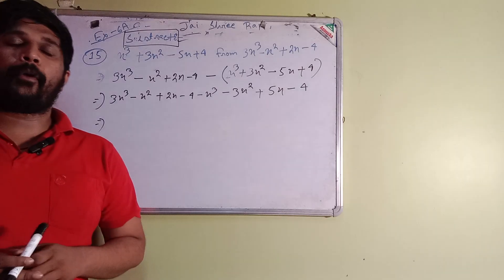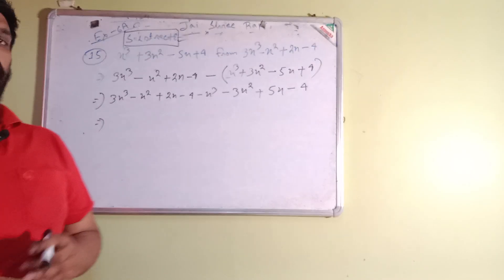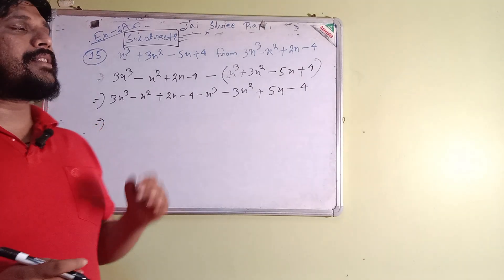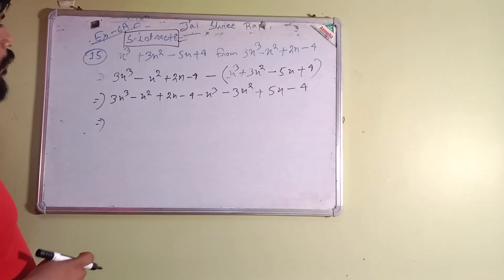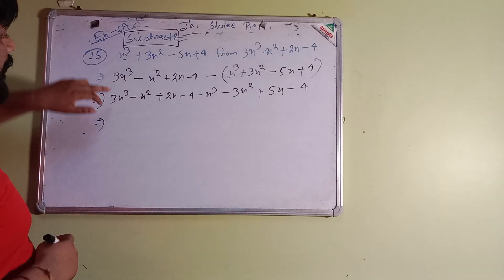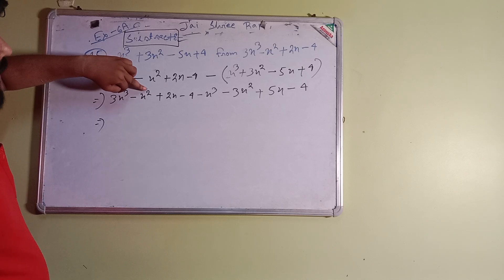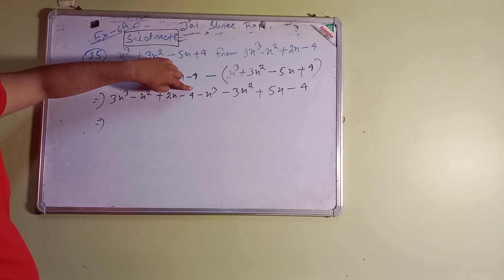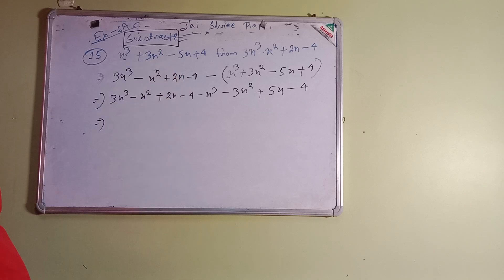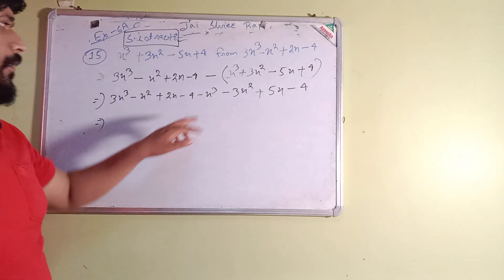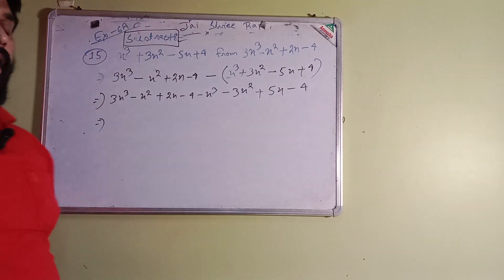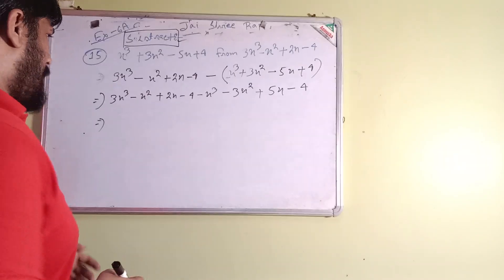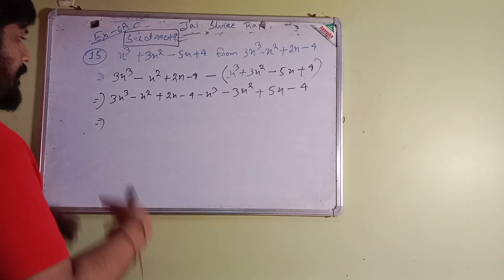Now we rearrange according to the degree of polynomials — you will study this properly in Class 9. The degree means the highest power. Here the highest power is 3, then 2, then 1, then 0. When any number has power 0, the answer is 1, so the constant term is just 4.